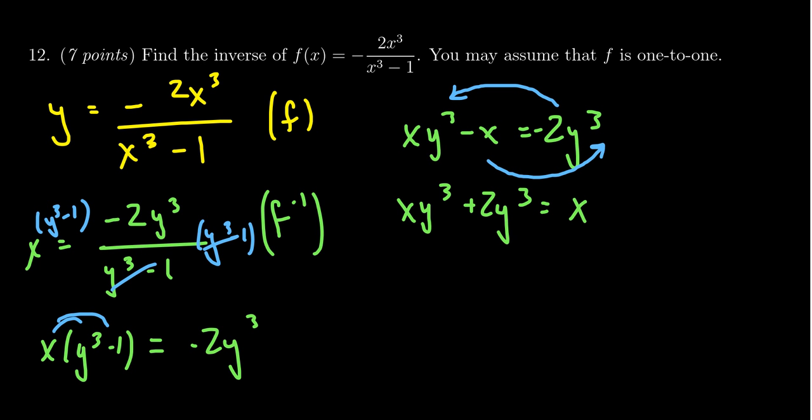Now on the left-hand side, you'll notice that everyone is a multiple of y cubed. We can factor it out, thus giving us y cubed times x plus 2. This is equal to x.